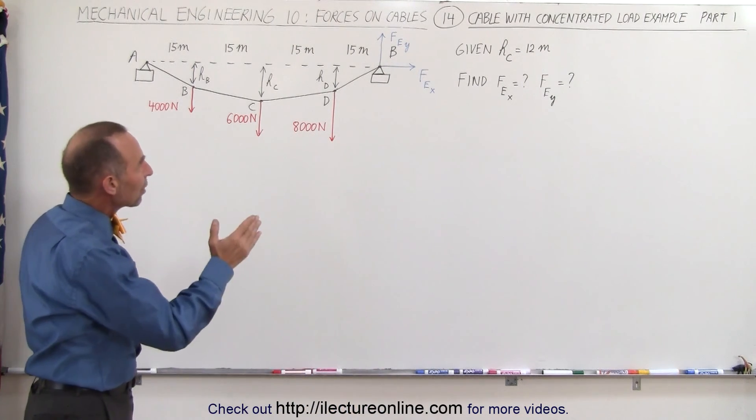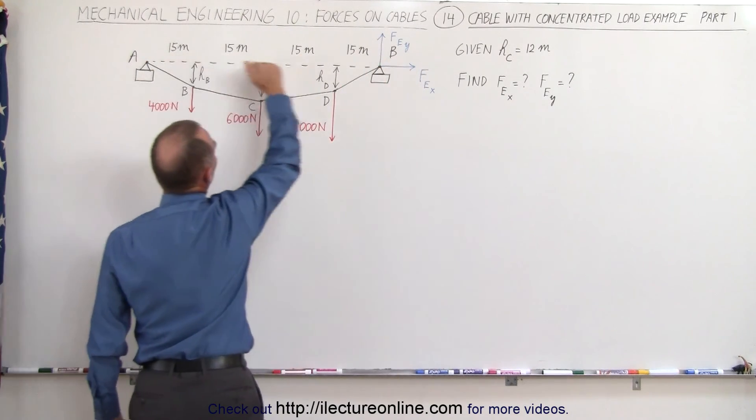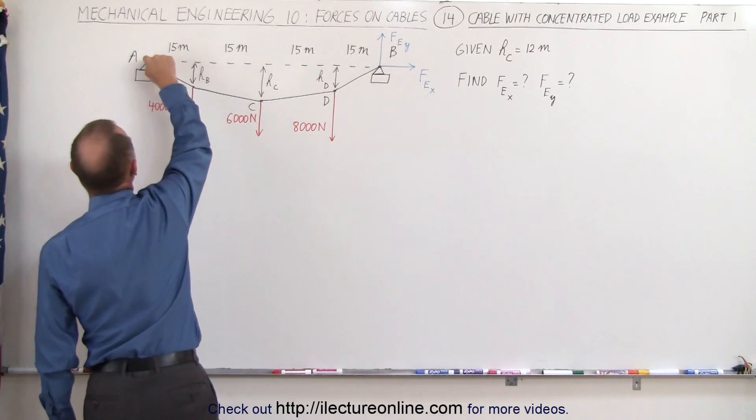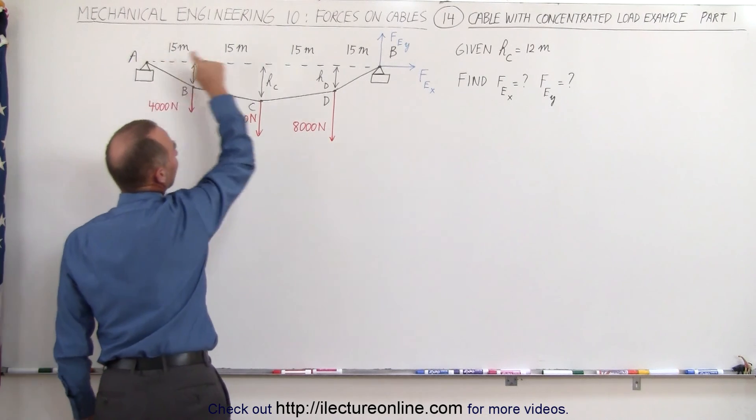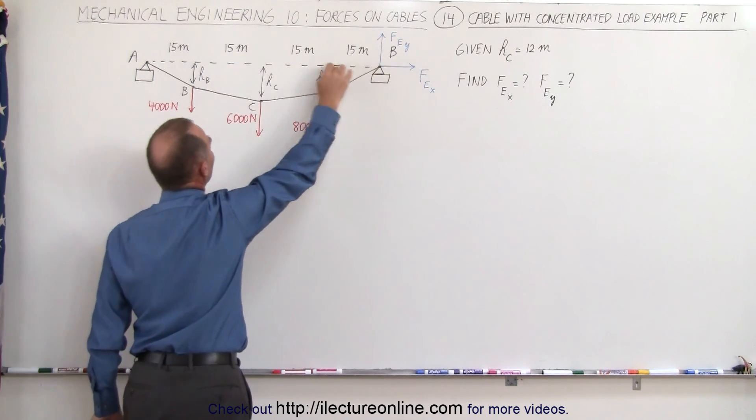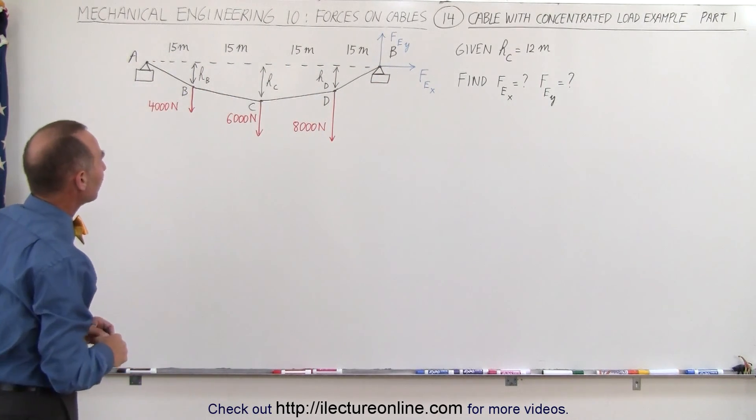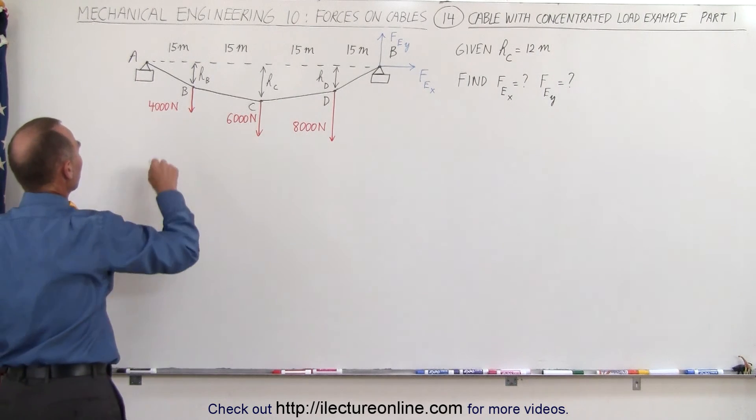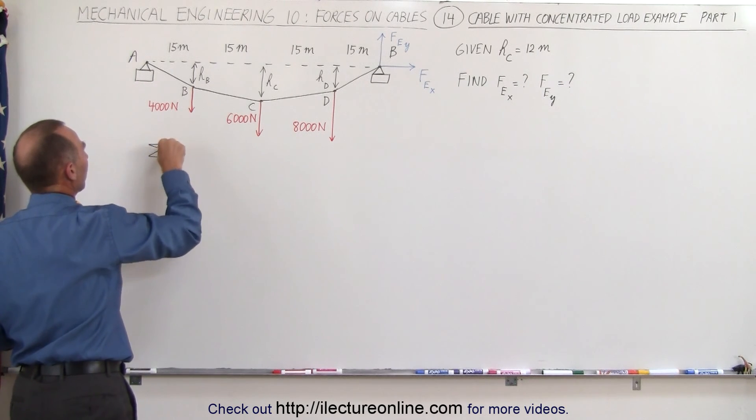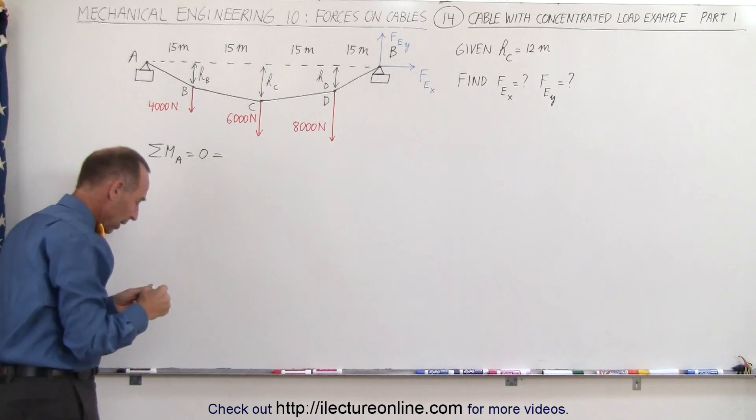Let's start out with the y direction first. Notice here that if we take the moment about point A, the force in the x direction will go away because the line of action goes right through the pivot point or through the point of rotation. So we can go ahead and use this equation: the sum of all the moments about point A have to add up to zero. So let's go ahead and do that.